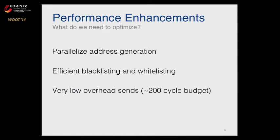During the optimization process, we concentrated on three different things. We wanted to make ZMAP more parallel by parallelizing address generation for more efficient hardware utilization. We needed efficient blacklisting and whitelisting. And obviously the most important part: very low overhead sending of packets. When you're sending 14.88 million per second, that's a budget of about 200 cycles per packet. For reference, a cache miss can be around 120 cycles.